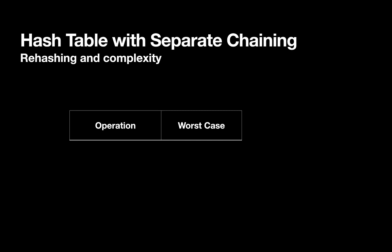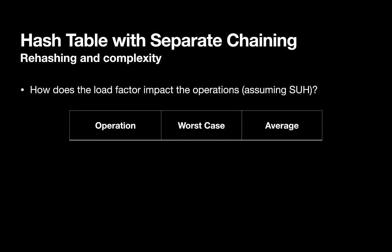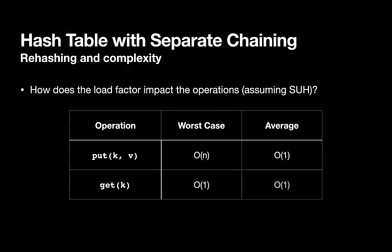So our hash table with separate chaining and rehashing, how does the load factor affect the operations? We can think about the true worst cases versus the average case. So the put, the true worst case is roughly order n. And the average case is constant time. The get is constant time and constant time. And the remove is also constant time and constant time. By the way, I'm assuming that for the remove, we are not decreasing the size of the hash table ever.